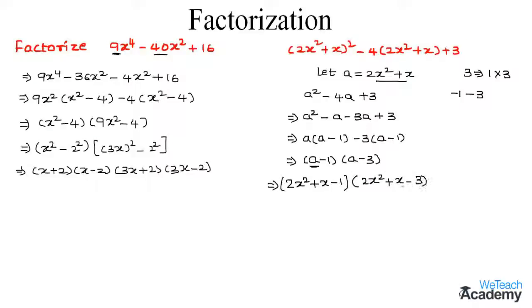Now again factorize both expressions. For the first bracket 2x square plus x minus 1: by multiplying the coefficient of x square and the constant term minus 1 we get minus 2. The factors of minus 2 are 2 and minus 1. Since 2 minus 1 equals 1, which is the coefficient of x, we can write this expression as 2x square plus 2x minus x minus 1.